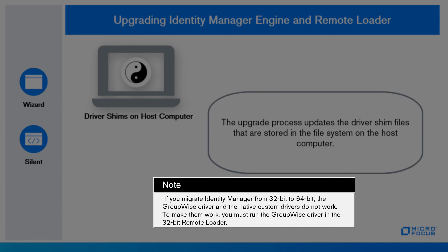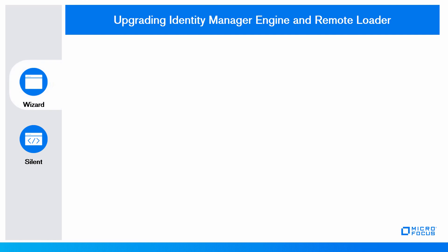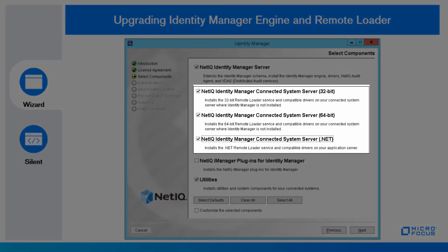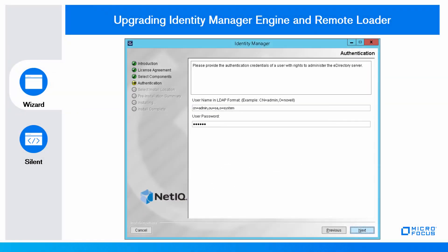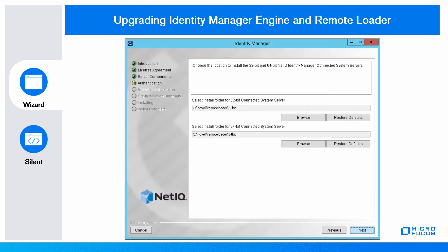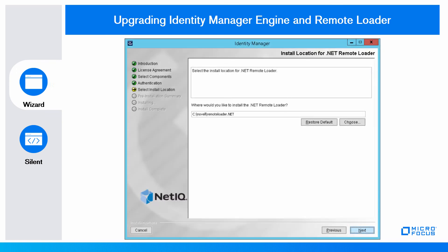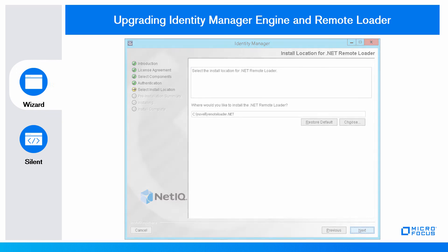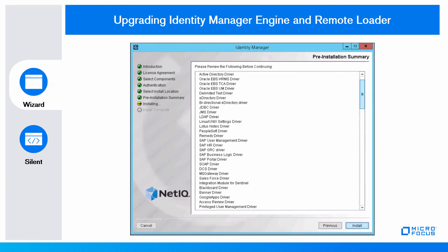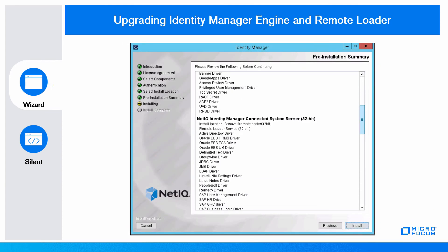To make them work, you must run the GroupWise driver in 32-bit remote loader. Using the wizard, in the Select Components page, check the checkboxes to install or upgrade remote loader. Provide the user name in LDAP format and password. Browse the installation path for remote loader — 32-bit and 64-bit respectively. Browse the path for .NET Remote Loader and for DirXML Utilities. Review the installation summary and click Install.